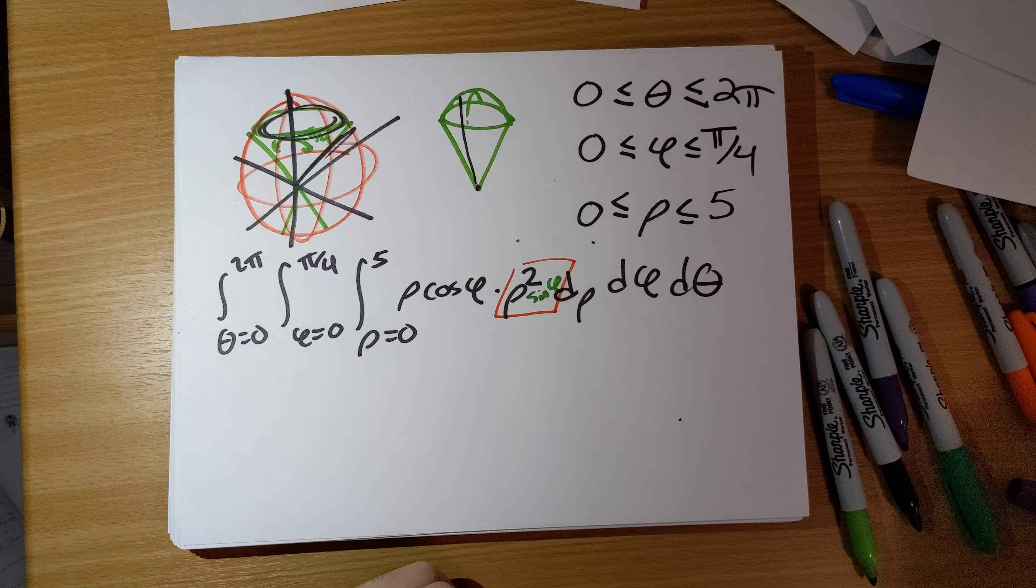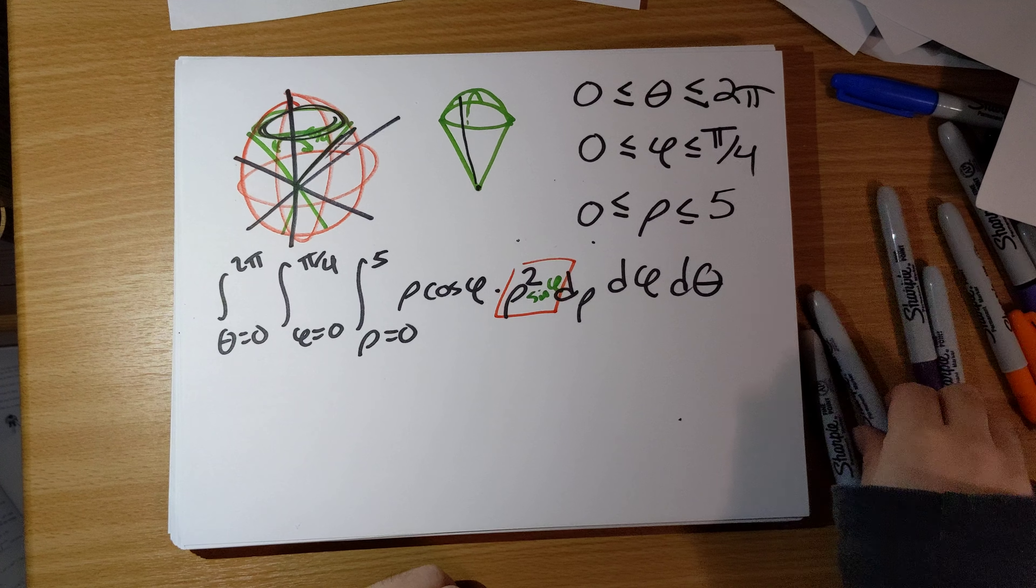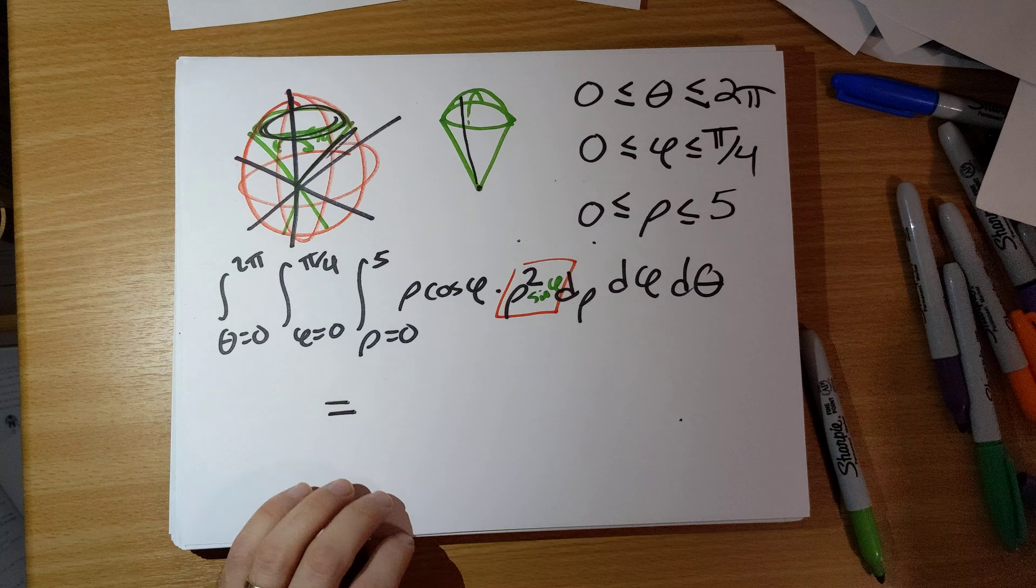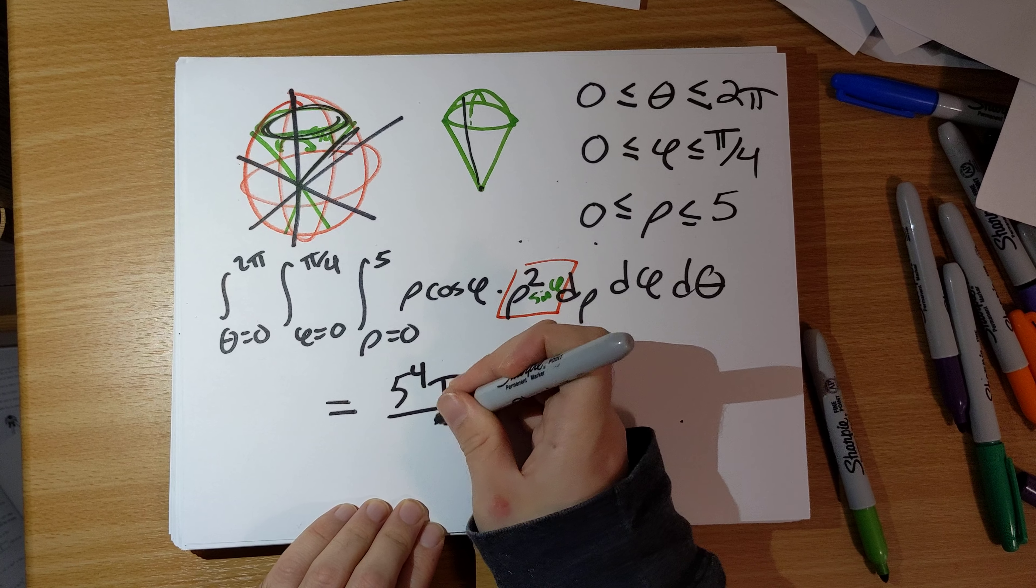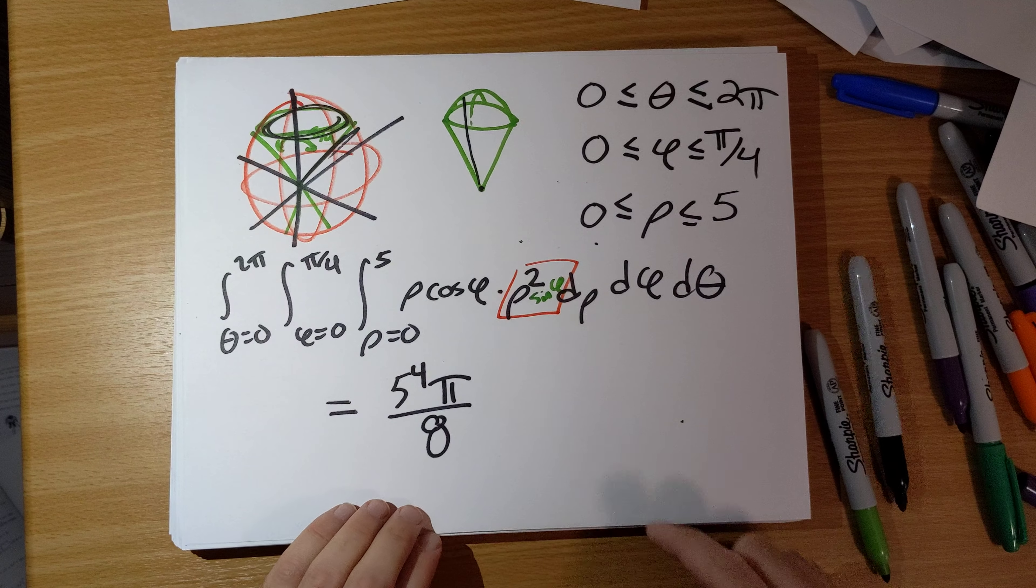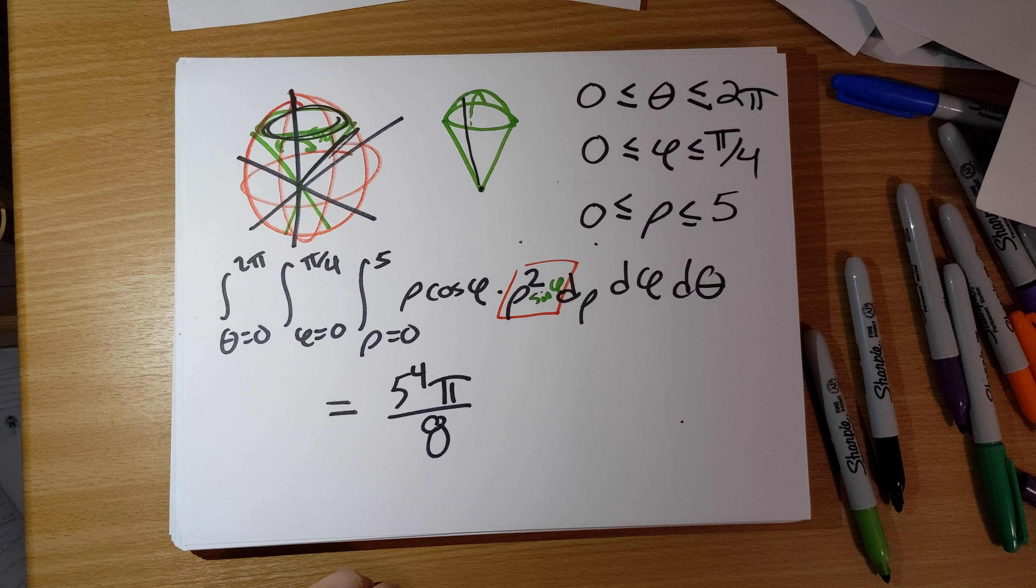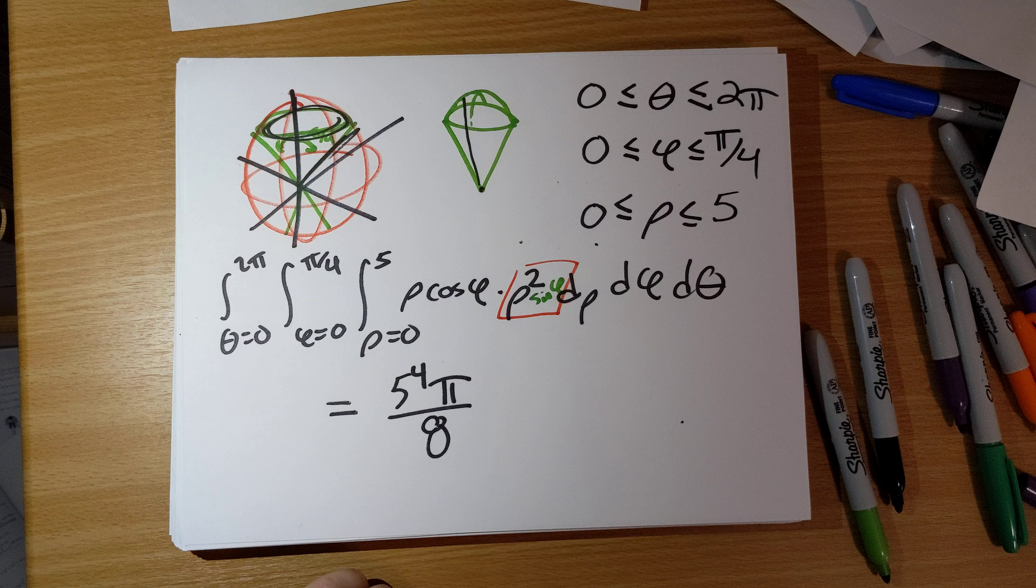Okay, so I think in the interest of time, this isn't a particularly interesting integral to evaluate. So if my notes are to be trusted, we eventually end up with 5 to the 4th pi over 8 here.